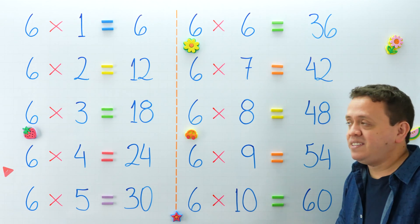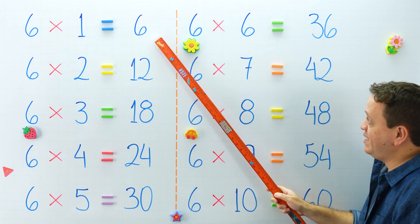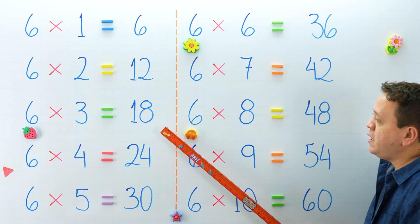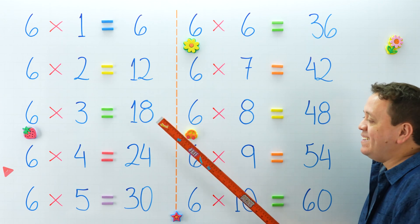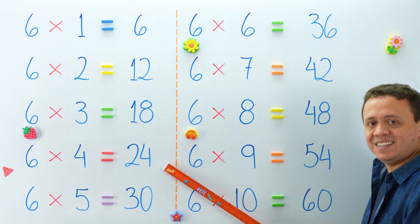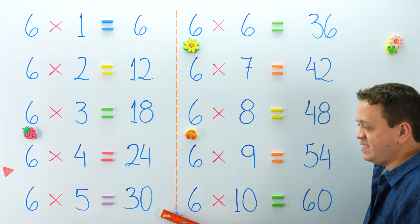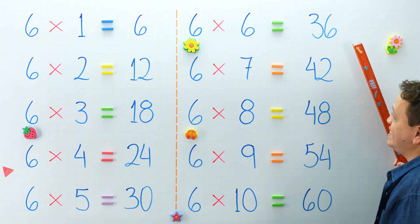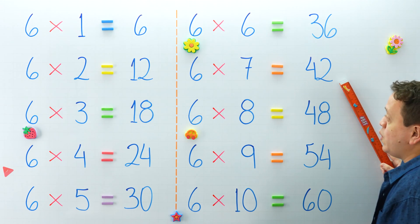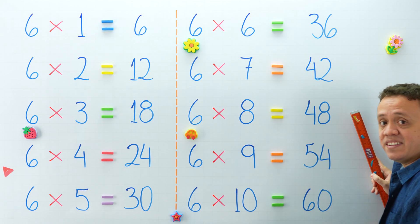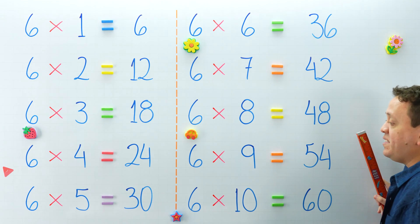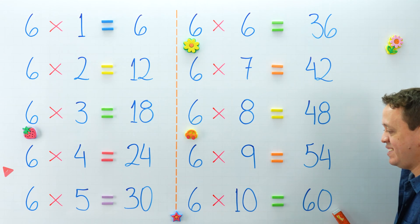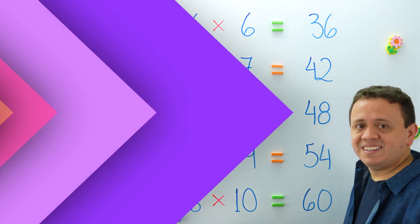Let's take another look at the products of this table. What is 6 times 1? And 6 times 2 equals? 6 times 3 equals? And 6 times 4 is equal to? What about 6 times 5? Over here, 6 times 6 is equal to? 6 times 7 equals? And 6 times 8 is equal to? What is 6 times 9? And 6 times 10 is equal to? Yes, we finish with this one.